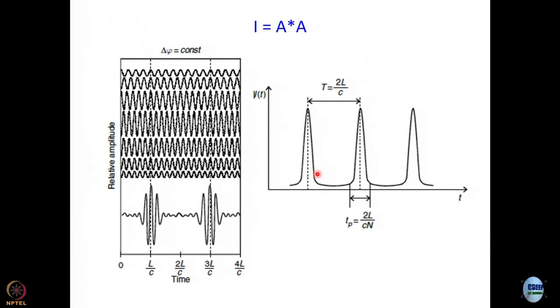We are going to show in the next module that separation between two pulses is going to be 2L by C. What is 2L by C? It is a round trip time, which is great. This is why we can do mode locking actually. The separation between pulses is actually a round trip time. And then, pulse duration as we are going to show in the next module is 2L divided by C n.